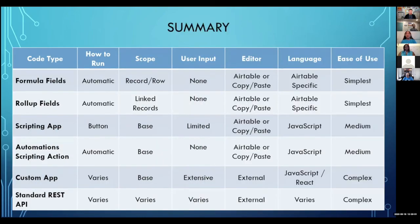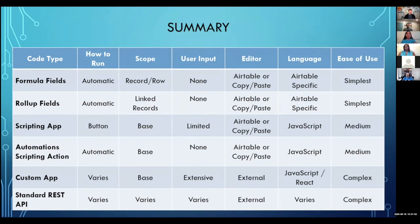Here's a quick overview of the different ways of adding code, ranked from easiest to use. Formula fields are the easiest. Then a little step up is rollup fields, because they have a different way of thinking about how Airtable stores data. Then a little bit harder is the scripting app; a little bit harder than that is scripting automations. And then if you've done that and you want to take that next jump, look at custom app development and maybe even the standard REST API. I've actually done and developed with all of these different methods. They are doable. They are learnable. Just take it a little bit at a time.